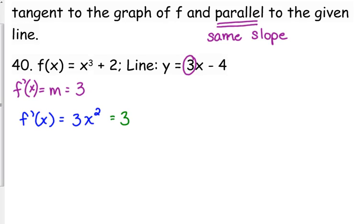So set it equal to 3, and we're going to solve for x. Divide both sides by 3. x squared is equal to 1. Take the square root. You must remember to always include the plus and minus.